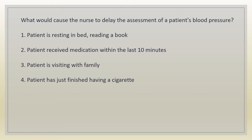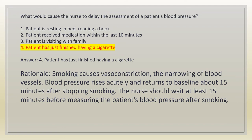When is the best time to measure a patient's blood pressure? 1. Patient is resting in bed, reading a book. 2. Patient received medication within the last 10 minutes. 3. Patient is visiting with family. 4. Patient has just finished having a cigarette. Answer: 4 is the worst time. The patient who has just finished having a cigarette should wait before having BP measured. Rationale: smoking causes vasoconstriction. Blood pressure rises acutely and returns to baseline about 15 minutes after stopping smoking. The nurse should wait at least 15 minutes before measuring.